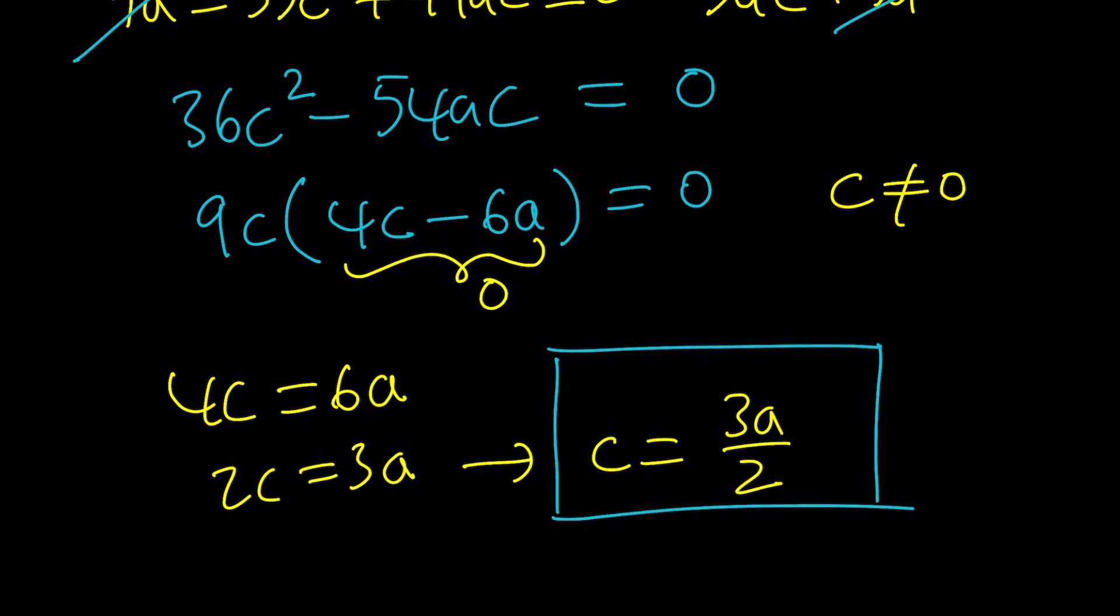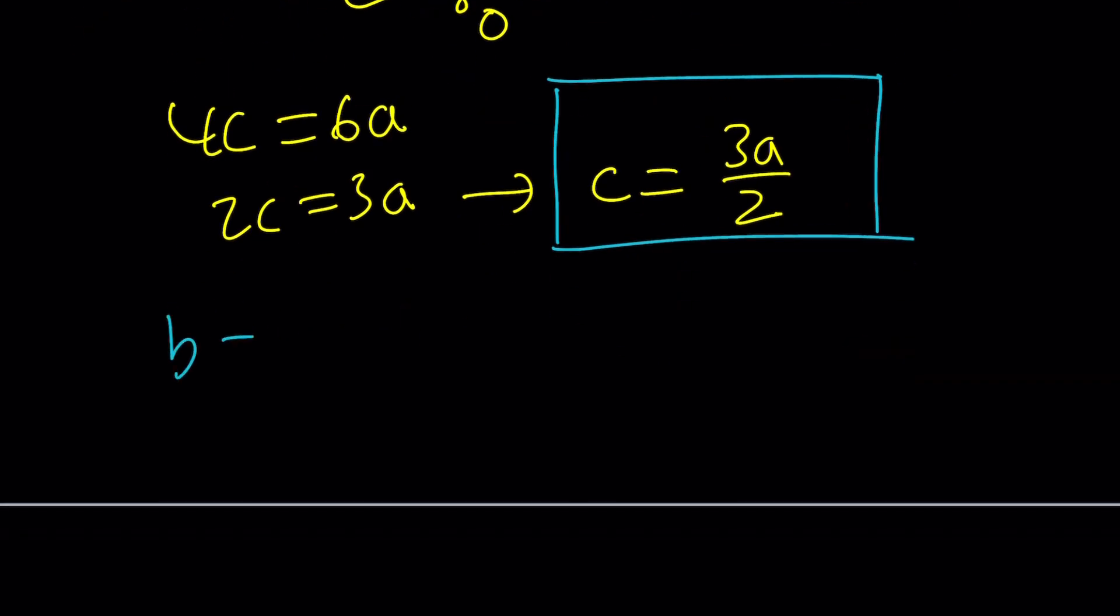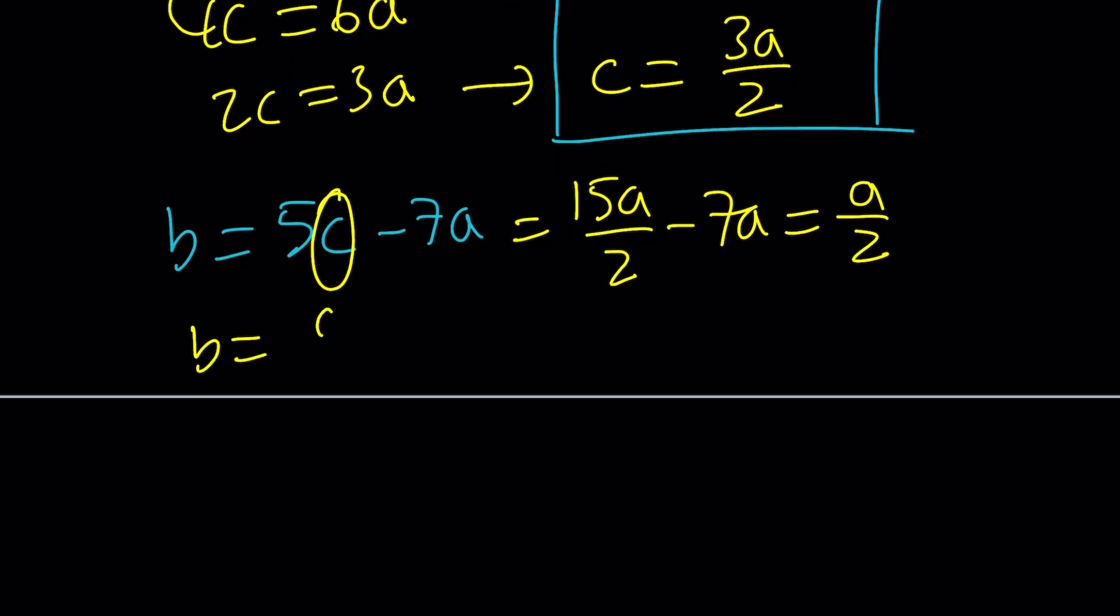We're going to use it to find the other ones. Now, since c is equal to that, and we do know that b is equal to 5c minus 7a, replace c with 3a over 2. That's going to give you 15a over 2 minus 7a. That's 14a over 2. That's going to give you a over 2, which means b is equal to a over 2. c is equal to 3a over 2. So, we got b and c in terms of a, which is great.